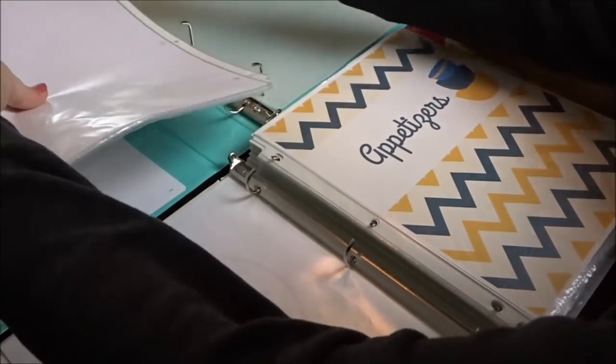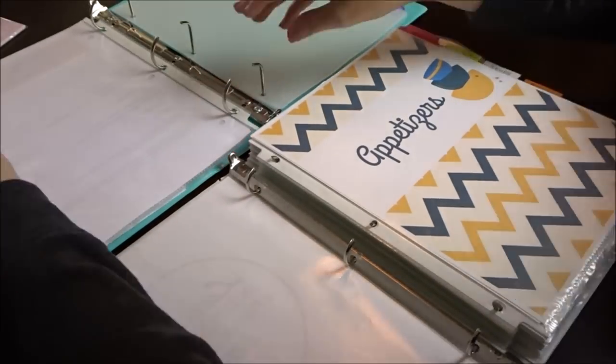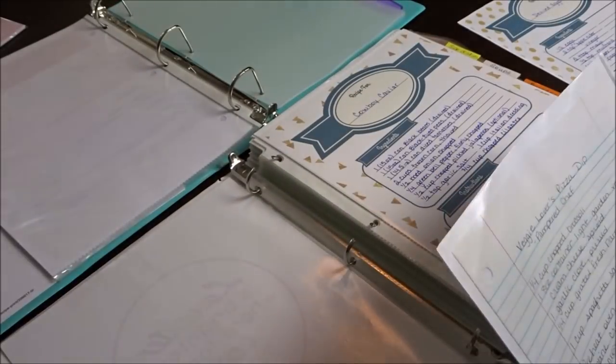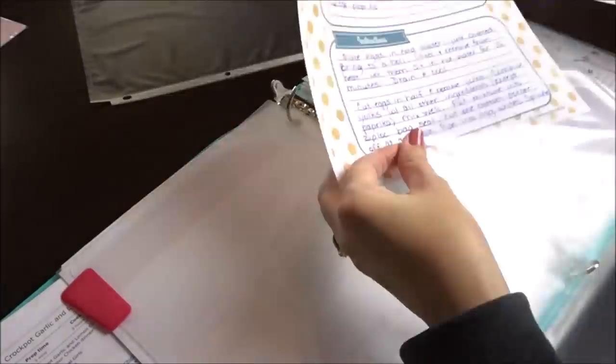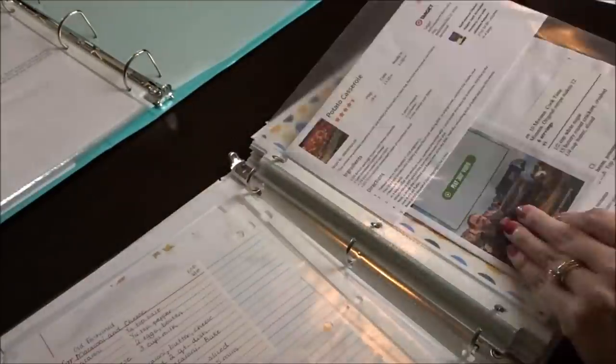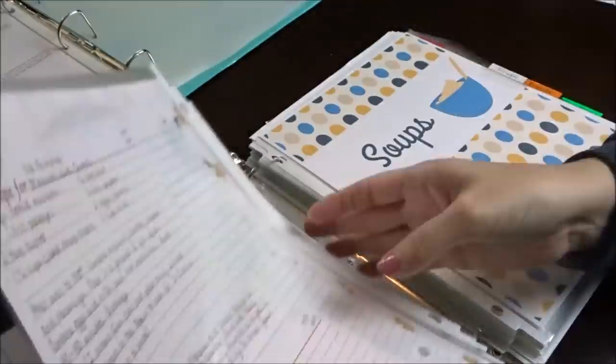Then it's time to go through all of my recipes and decide what I'm going to keep and how to recombine them into only five sections. Before I had nine or ten sections.